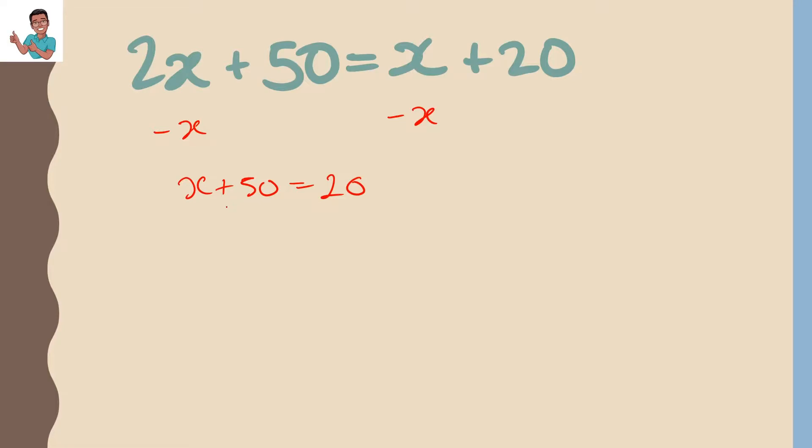And then we want to move this 50 to the other side. So we minus 50 on both sides. So we get x equals minus 30.